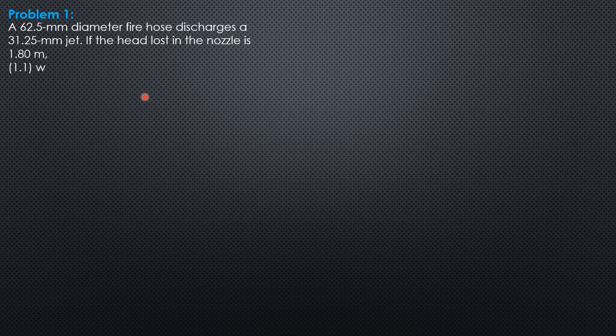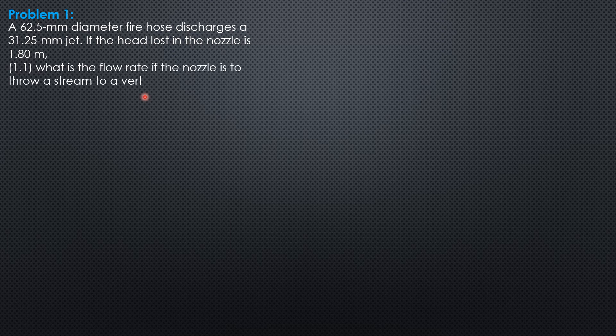Problem 1 on flow meters. A 62.5 mm diameter fire hose discharges a 31.25 mm jet. If the head loss in the nozzle is 1.8 meters,